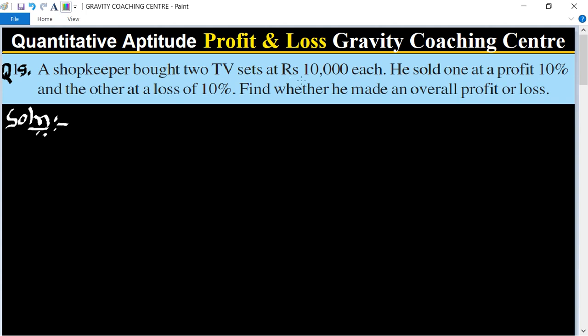So in this question, the cost price of two TV sets equals rupees 10,000 each. So first we write CP of first TV equals its price is 10,000.